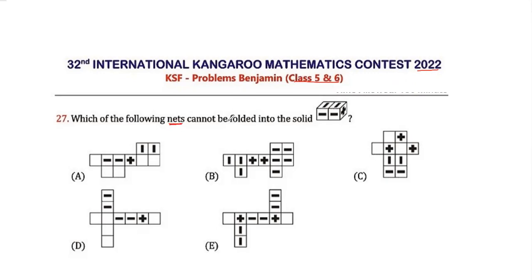What we are given is the net of a cuboid. This is a cuboid and we have to see which one of them we cannot fold and make this box. Now if you see this box, what is the thing?